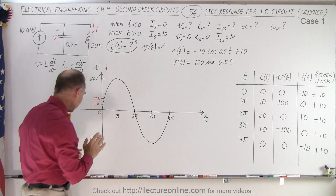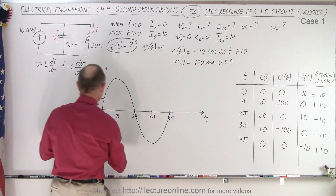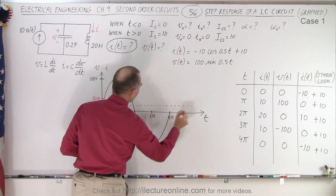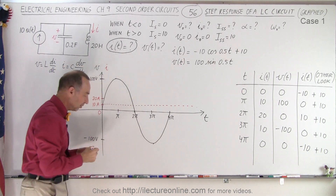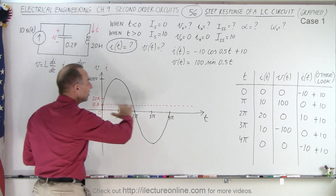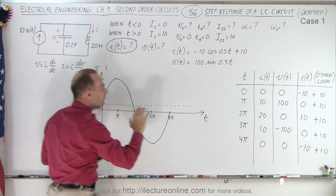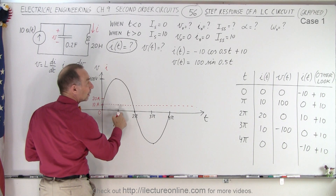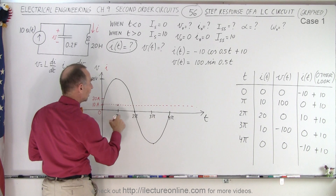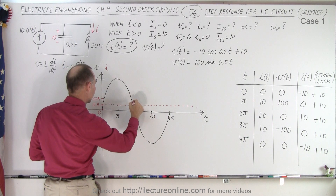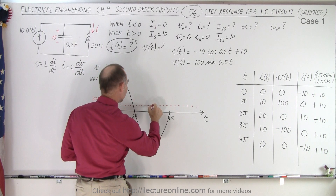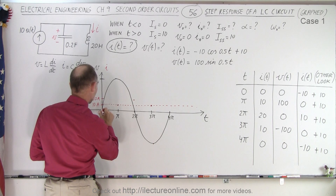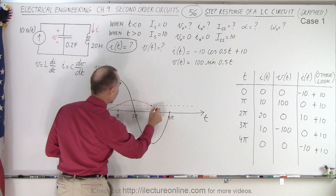Now let's draw the current. Since we have the offset current of +10, we start by drawing a horizontal line at +10 — that's the DC current offset of 10 amps. On top of that, we draw the oscillating portion: at t=0 we're 10 amps below the offset line; at π we're on the line (0 relative to offset); at 2π we're 10 above; at 3π we're back on the line; and at 4π back to −10 relative to the offset. The resulting curve oscillates around the +10 line.